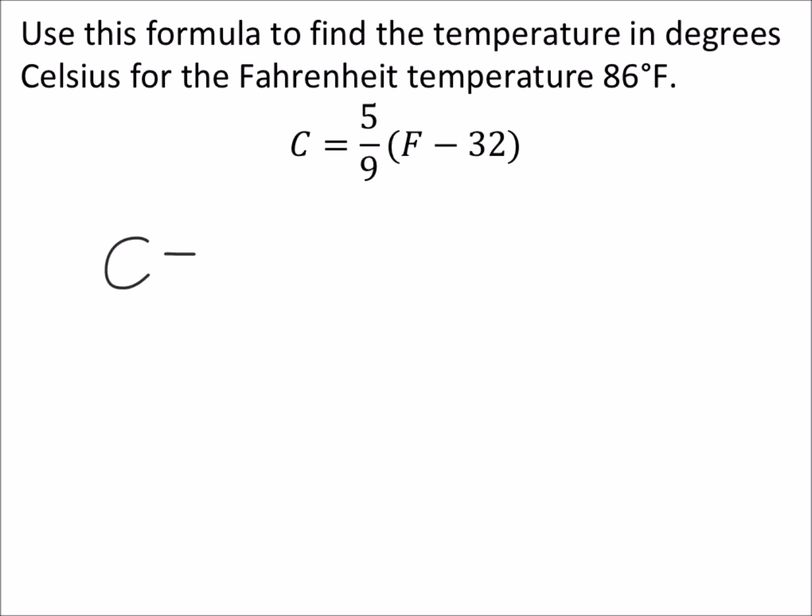The Celsius degrees is 5 ninths times the Fahrenheit degrees, which is 86, and we'll subtract 32 out of that first because it's in the parentheses. This again is just all order of operations stuff.